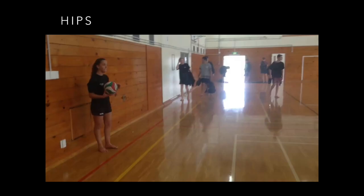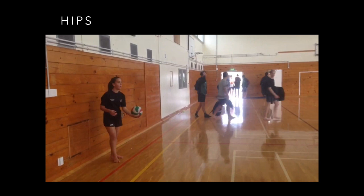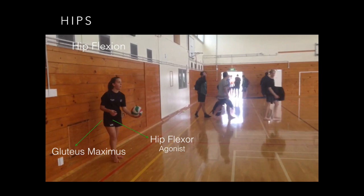Bigger to smaller muscles. In my pre-test serve I did not start using the biggest muscles in my body, as I started with the hips instead of the core. This means I was not able to generate as much force to transfer into the ball, therefore resulting in a weak serve. The first movement of my pre-test serve is the hips, a deep ball and socket joint, involving the hip flexor and gluteus maximus, with the leg coming forward showing hip flexion — the agonist being the hip flexor and the antagonist being the gluteus maximus.